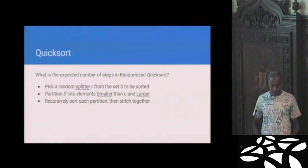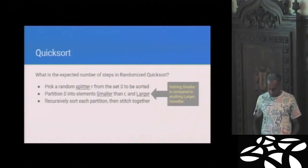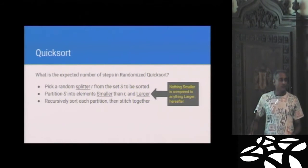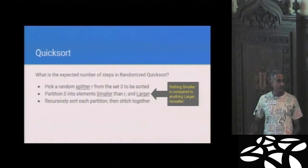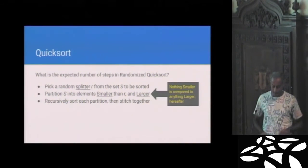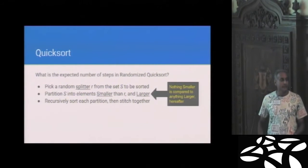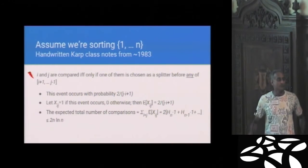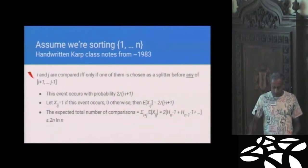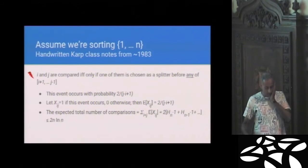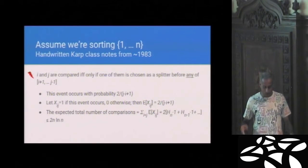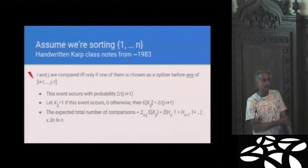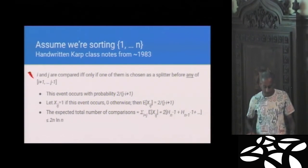So what are we after here? We're looking at the expected number of comparisons in a round of quicksort. And we'll be able to write down an expression for this. The key observation is when you split, once you split in a round of quicksort, nothing in the smaller set is ever compared to anything in the bigger set. So the twain shall never meet again. And that's all that you need to finish writing down the expression for the expected number of comparisons in one slide. And here's how it goes. Let's just assume we're sorting the numbers one through n. So here are handwritten class notes from Karp's lectures about 83.